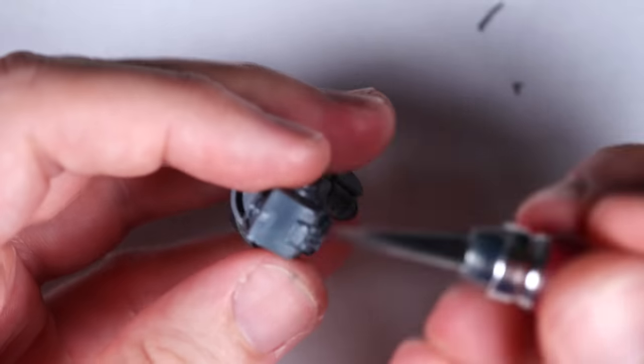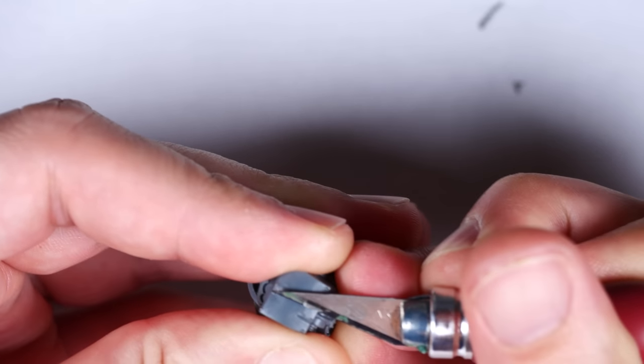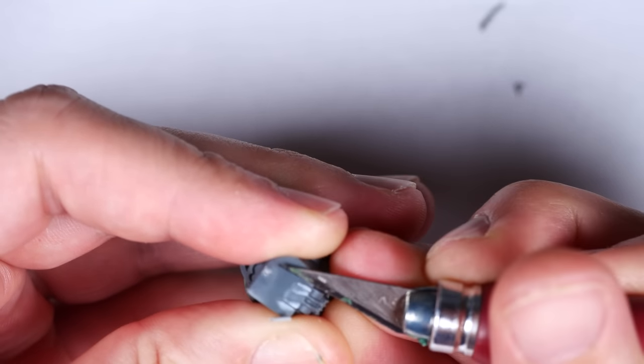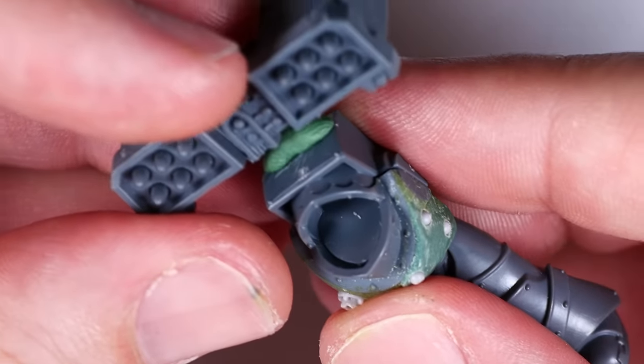With the torso out of the way, really the last part to worry about is how to attach the missile launcher to the back of the Terminator plate. As I'm sure many of you have seen, I'm actually fairly lazy with my conversions. So all I did here was really scrape off this bump on the back, then take a spare blob of putty and squish the missile launcher onto the Terminator armor.